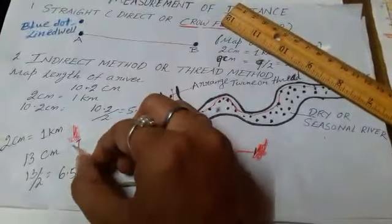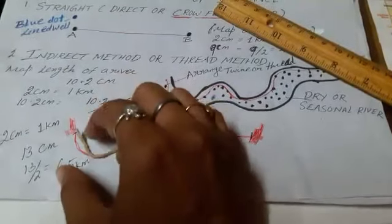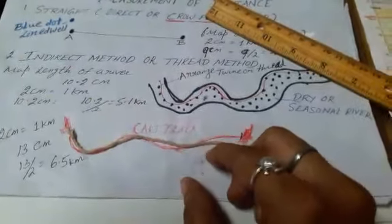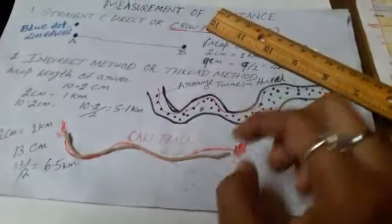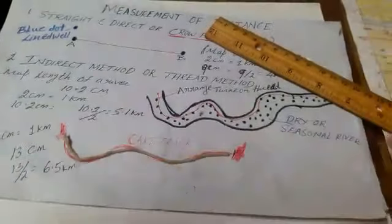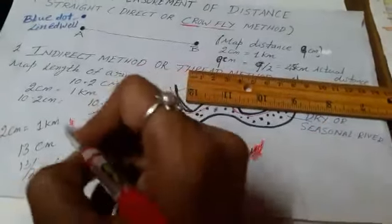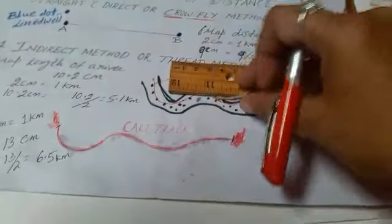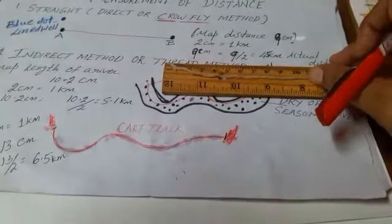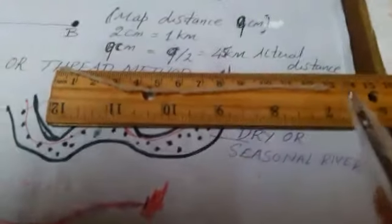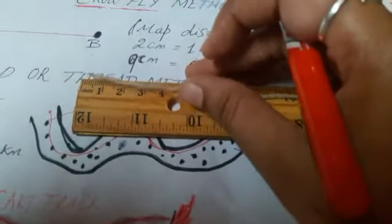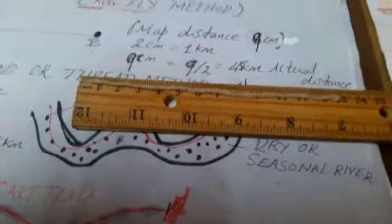The indirect method is used for zigzag paths like rivers or car tracks. We wet the thread so it easily follows the curved path between two points. After arranging the thread from A to B, we mark both ends and measure it against the scale. For example, if it comes to 13 cm, and the scale is 2 cm = 1 km, then 13 ÷ 2 = 6.5 kilometers. This is known as the thread method.